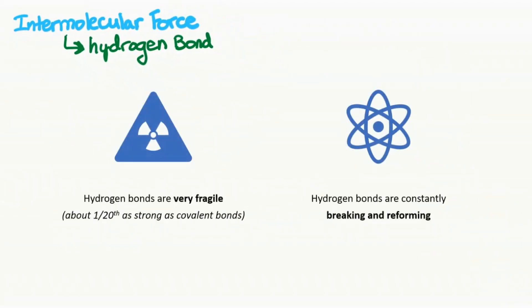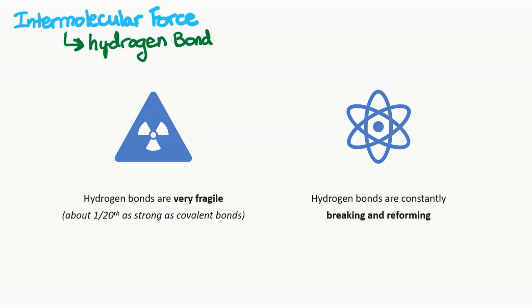Now two things to note about our hydrogen bonds are that hydrogen bonds are very fragile. They're about 1/20th as strong as our covalent bonds. And hydrogen bonds are constantly breaking and reforming. This factoid will come into play a little bit later.